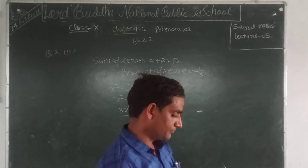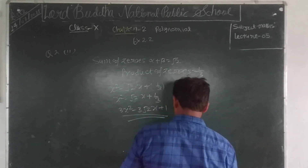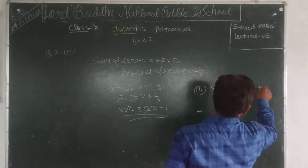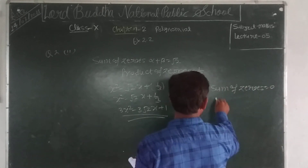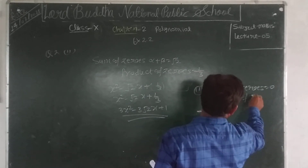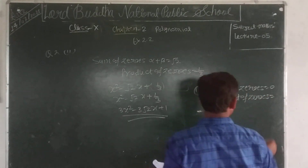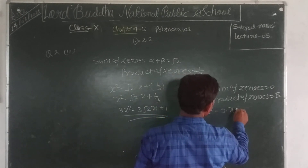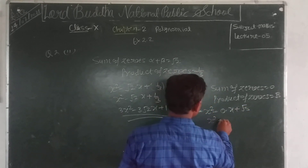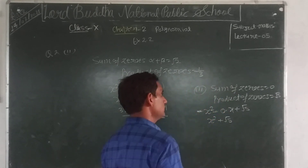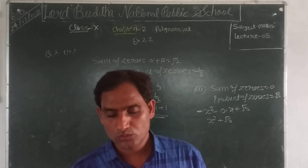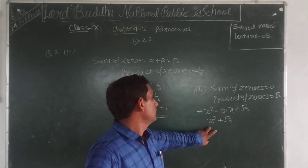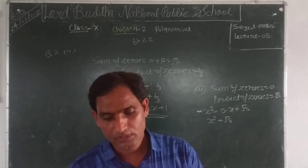We take the third part of this problem. Given that sum of zeros equals 0 and product of zeros equals root 5. The quadratic polynomial is x² minus 0 times x plus root 5, which equals x² plus root 5. This is the required polynomial.